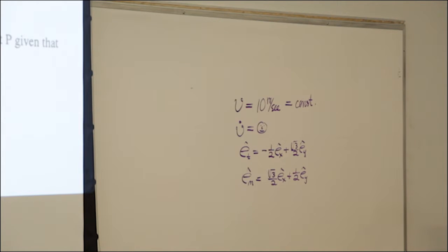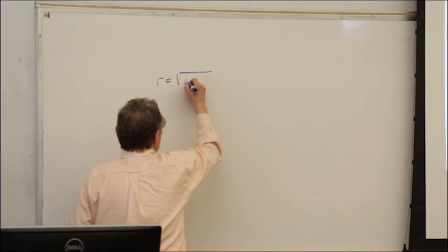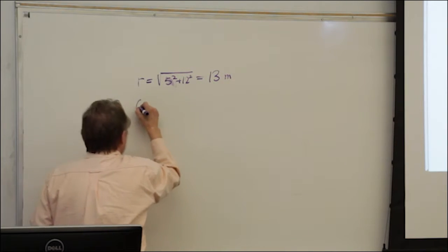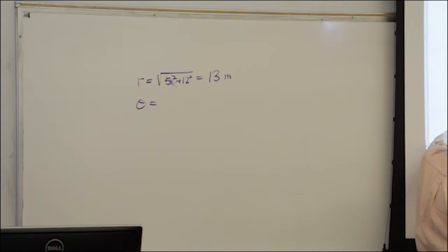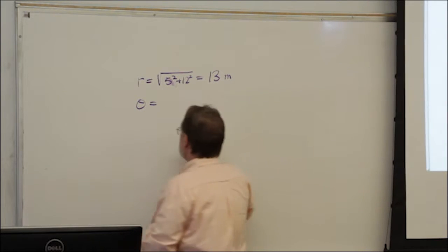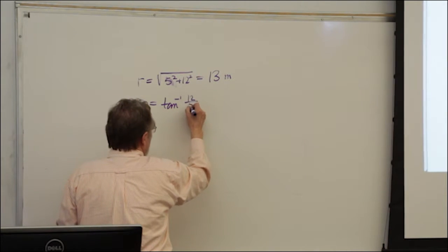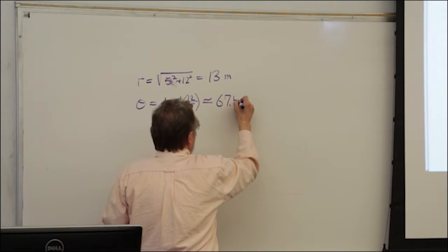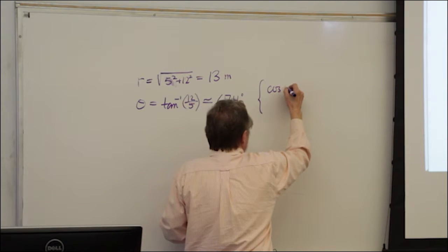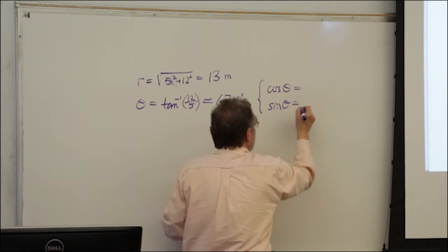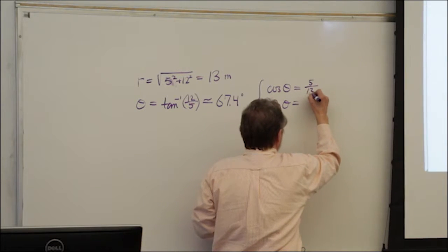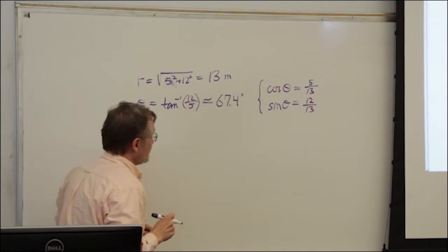Part A says determine the polar coordinates at this point. The distance from the origin is square root of X squared plus Y squared, which is square root of 169, exactly 13 meters. The polar angle is measured from the X axis to the radial line — inverse tangent of 12 over 5, about 67.4 degrees. More important are the cosine and sine values: cosine is 5 over 13, and sine is 12 over 13. Those are exact expressions.